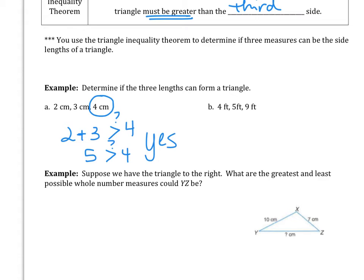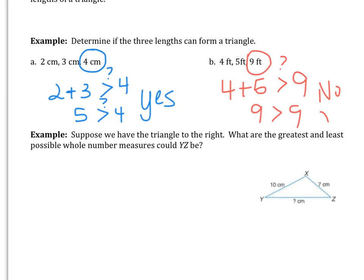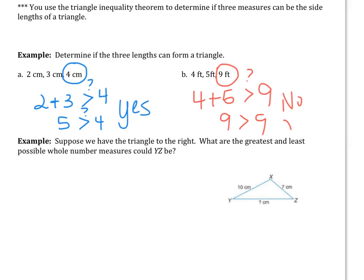Alright, and the next one. Again, circling that larger side. Are the smaller two sides added together, 4 plus 5, greater than that third side, which is 9? So is 9 greater than 9? The answer to that question is no. So they are congruent, so they don't form a triangle. Not a triangle.